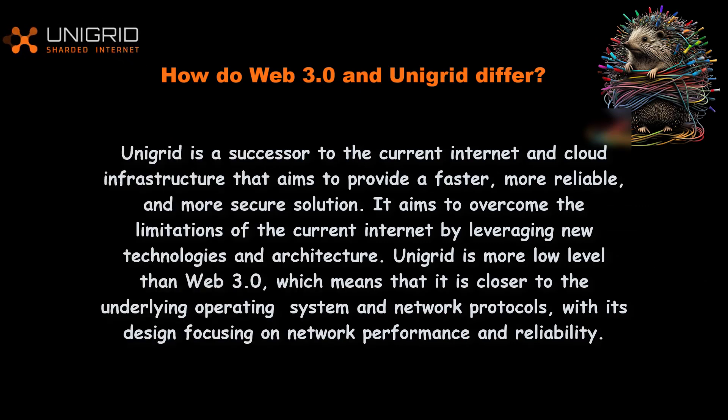How do Web 3.0 and Unigrid differ? Unigrid is a successor to the current internet and cloud infrastructure, aiming to provide a faster, more reliable, and more secure solution by overcoming limitations of the current internet through new technologies and architecture. Unigrid is more low-level than Web 3.0, meaning it is closer to the underlying operating system and network protocols, with its design focusing on network performance and reliability.